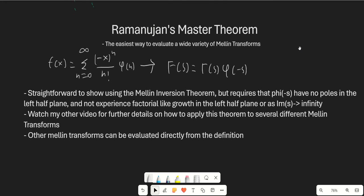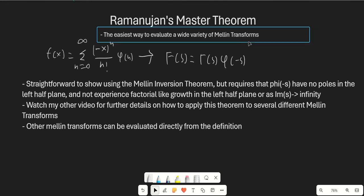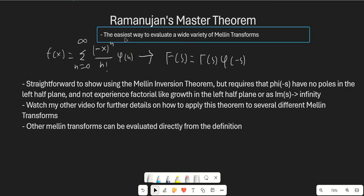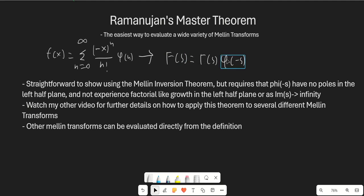Ramanujan's master theorem is the easiest way to calculate a wide variety of Mellin transforms. If we have some function equal to the sum from n equals 0 to infinity of negative x to the n over n factorial times some other function phi of n — so basically if phi of n is 1 we get e to the negative x, if phi of n is something else we get different functions — this tells us that our Mellin transform f of s is going to be gamma of s times phi of negative s. We need phi to have no poles in the left half plane and not experience factorial-like growth in the left half plane either.